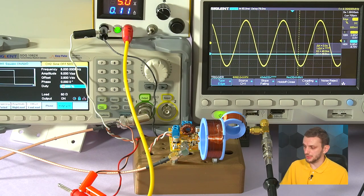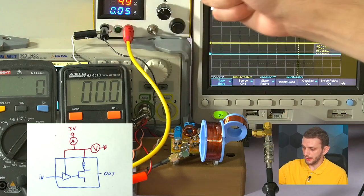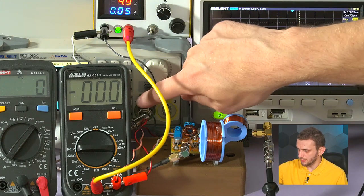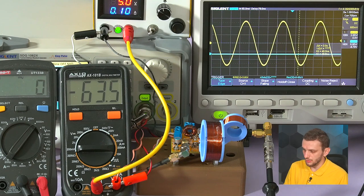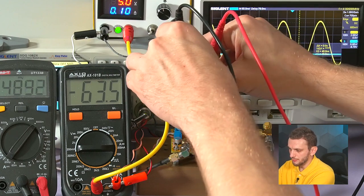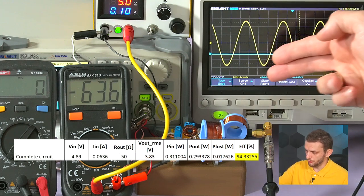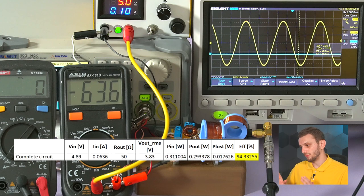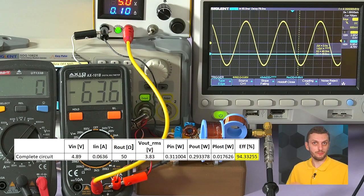So for that, I connected the ammeter in series with the supply. So when we turn on the circuit, apply our square wave, we have our output signal, we are drawing around 64 milliamps, and the supply voltage is at around 4.89. If we also factor in the 3.83 volts of RMS output voltage, this gives us a global efficiency of around 94%, so a very good value.